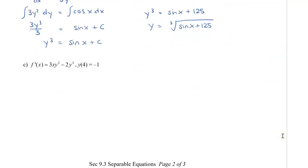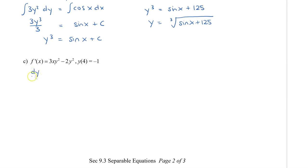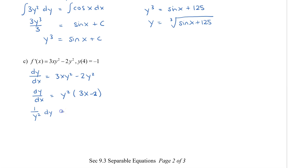Let's take a look at one more example. We change f prime to dy/dx equal to 3xy squared minus 2y squared. We factor out y squared, so dy/dx equals y squared times (3x minus 2). We can now separate this as 1 over y squared dy equals 3x minus 2 dx. I'll put in the integral symbol. Integrating the left side gives negative 1 over y — think of it as y to the negative 2; integrating adds 1, giving y to the negative 1, which moves to the denominator.